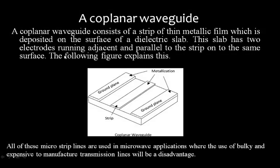All of these microstrip lines are used in microwave applications. At very high gigahertz frequencies, losses in conventional transmission lines become significant, so strip lines and microstrip lines are preferred. The advantage is that conventional bulky and expensive-to-manufacture transmission lines can be replaced by these compact planar structures.